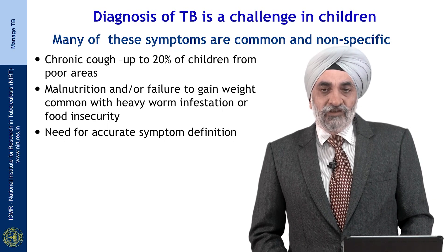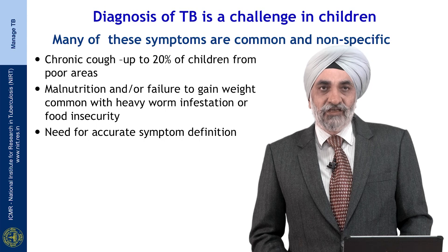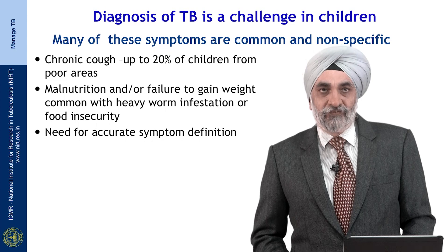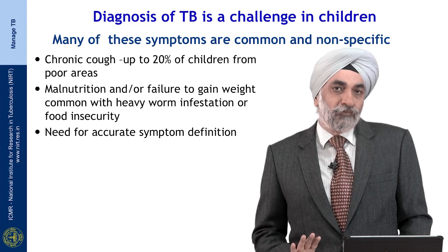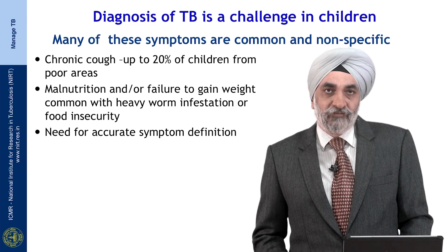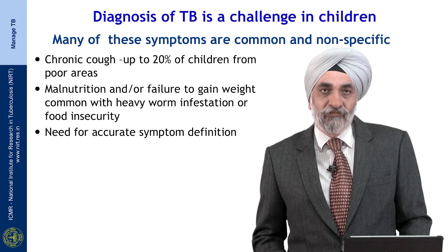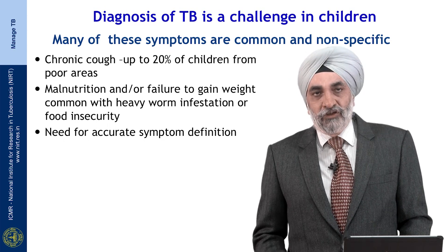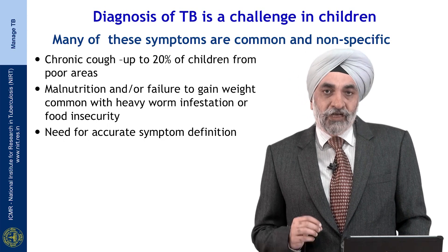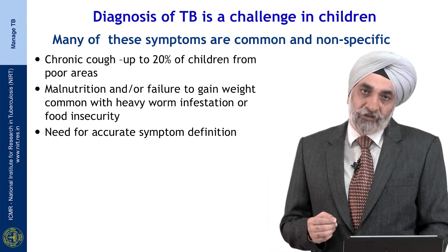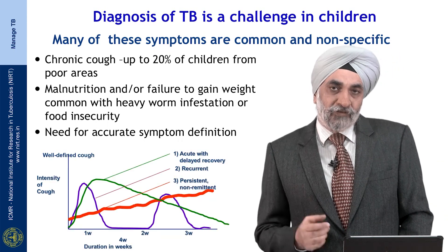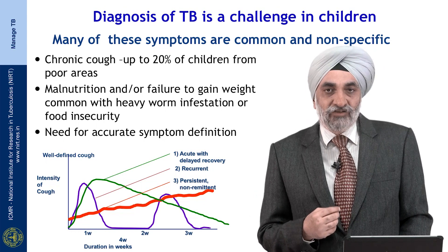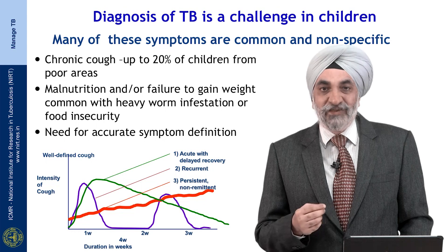Diagnosis of TB in children still remains a challenge because many of these symptoms are common and nonspecific. Chronic cough affects up to 20 percent of children from poor areas; malnutrition or failure to gain weight is common with heavy worm infestation or food insecurity. So there is a need for accurate symptom definition. Let me elaborate this point by taking cough as a symptom to describe. When a mother comes to you and says that my child has had cough for the last 2 months, it could mean several things.